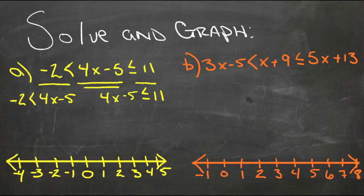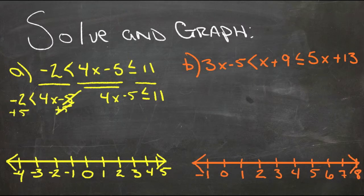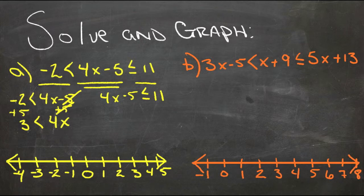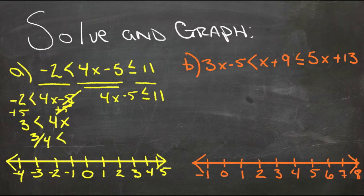Now we can solve these two little inequalities pretty easily. We just add 5 to both sides, plus 5, 5s cancel, negative 2 plus 5 is 3, 3 is less than 4x, divide both sides by 4, and we get 3 quarters is less than x. So x is greater than 3 quarters.